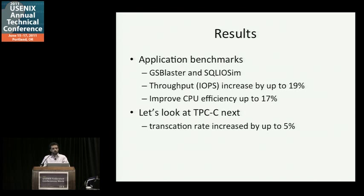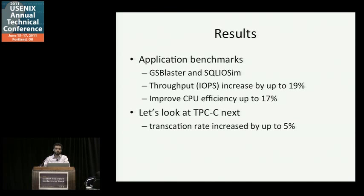The paper contains details about microbenchmarks as well as application benchmarks. GS Blaster and SQL ISM are application benchmarks where the real application runs against a model workload. We saw throughput improvements up to 19% and CPU efficiency improvements up to 17%. This means that if these workloads were doing a lot of complicated calculations, that extra 17% of CPU efficiency would have provided a lot of additional benefit. For TPCC, a real complicated workload, the transaction rate increased up to 5% depending upon parameter choices, with default parameters giving more than 3% improvement.